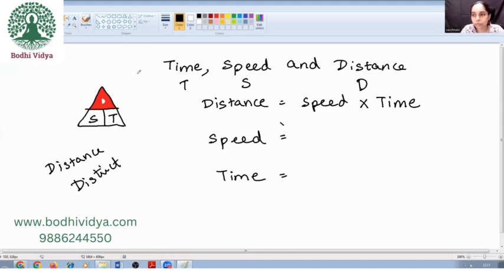Now, what is speed? I'll take another triangle for better understanding: D, S, and T. What is speed? We'll try to fill this in. Speed is nothing but distance divided by time. It is clearly evident: D divided by T.